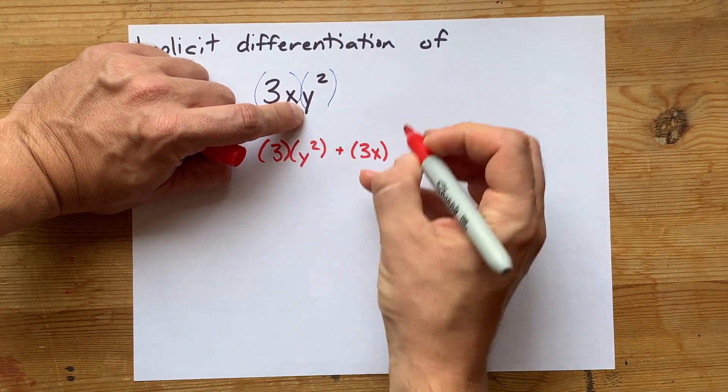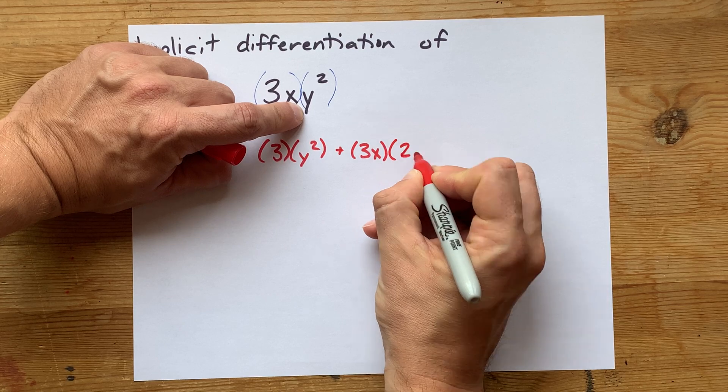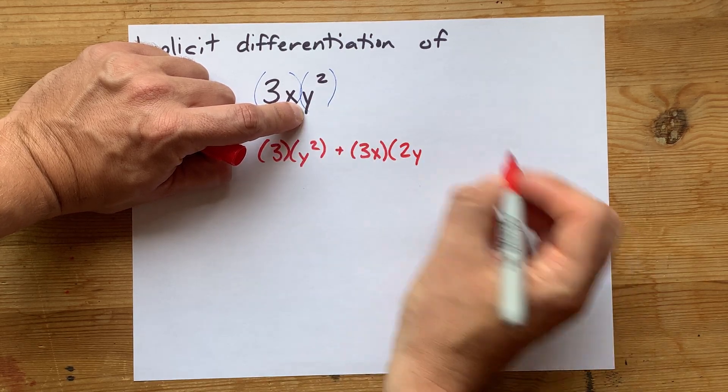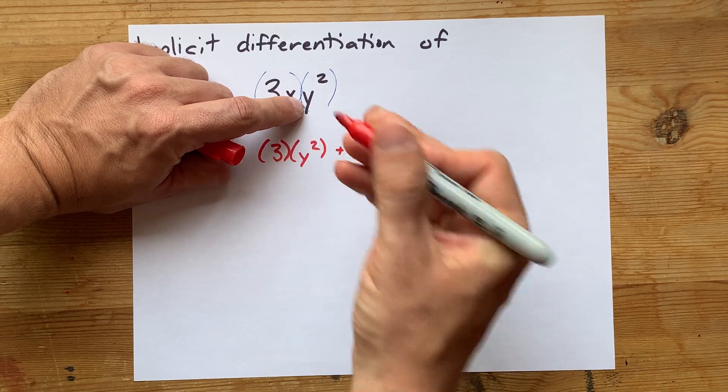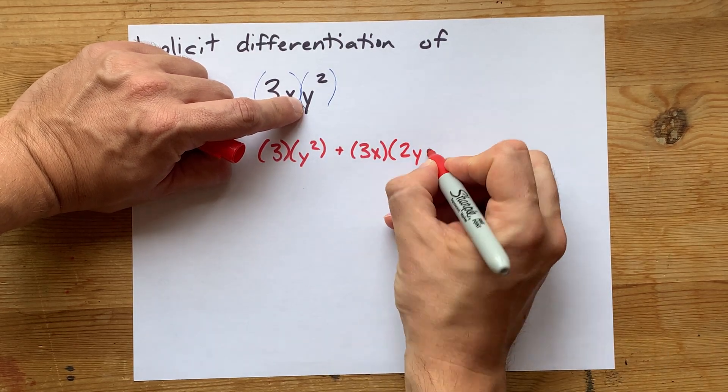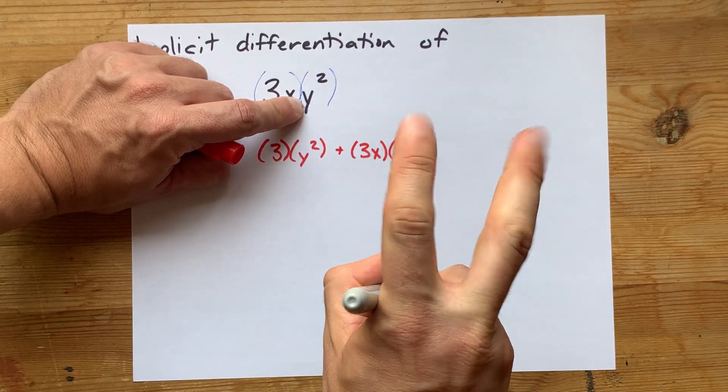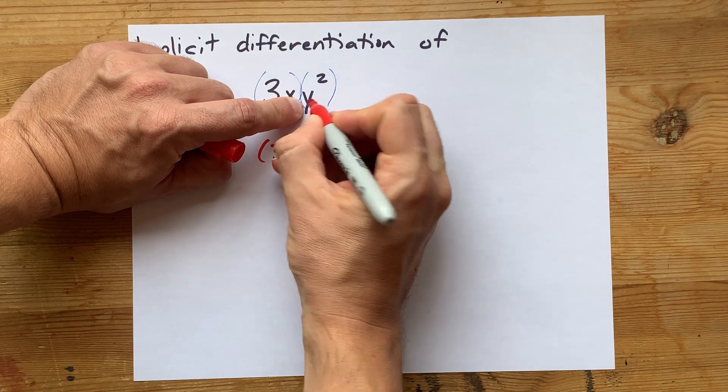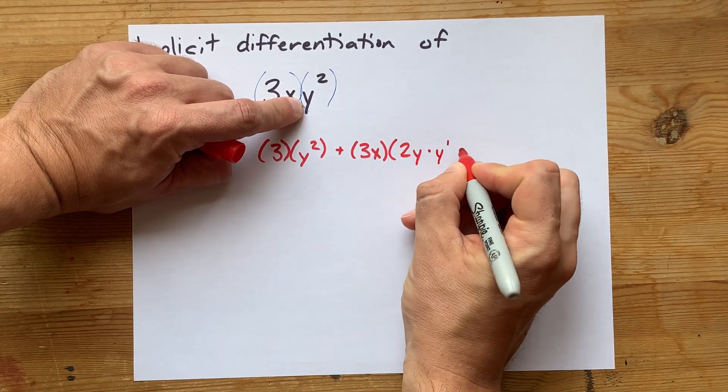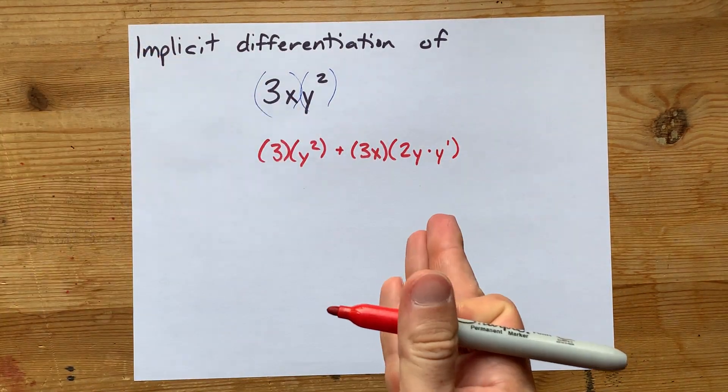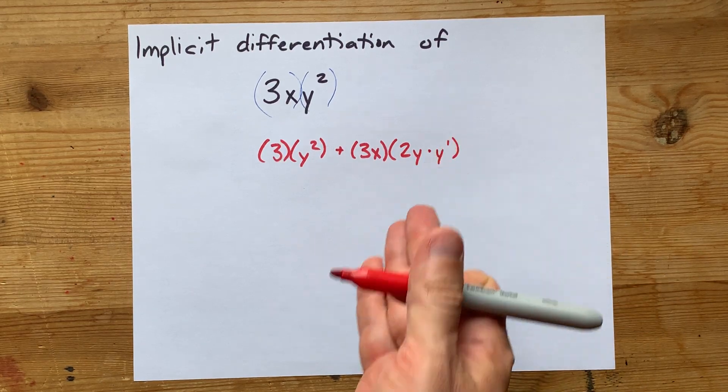Anything squared, its derivative becomes 2 times that thing that was squared. But then if that thing itself wasn't just x, you also have to multiply it by the derivative of the inside. The derivative of y is y prime, or your teacher may prefer dy by dx instead of that.